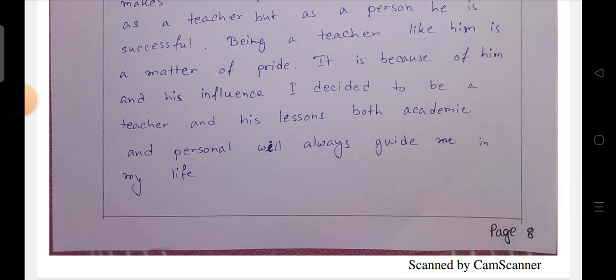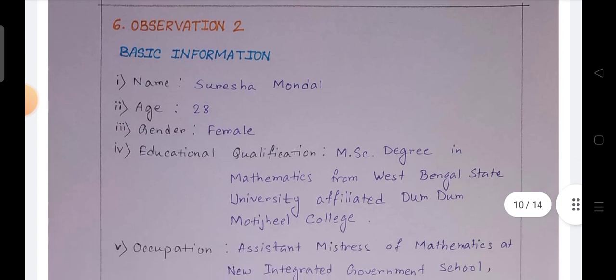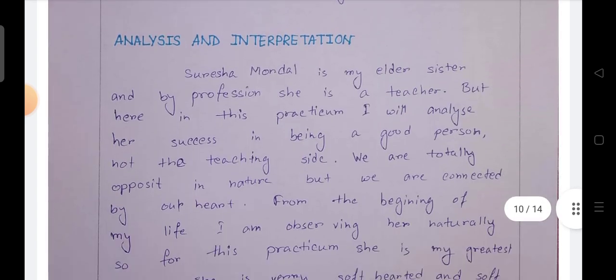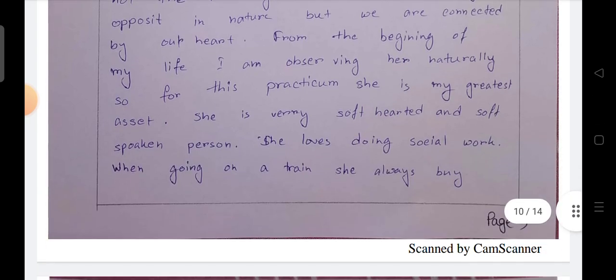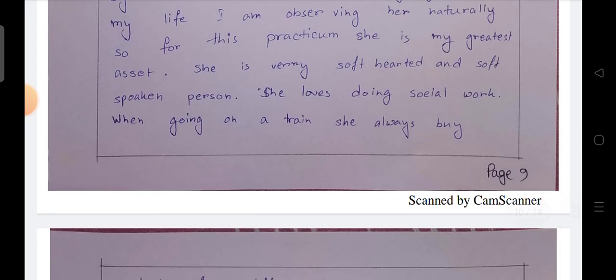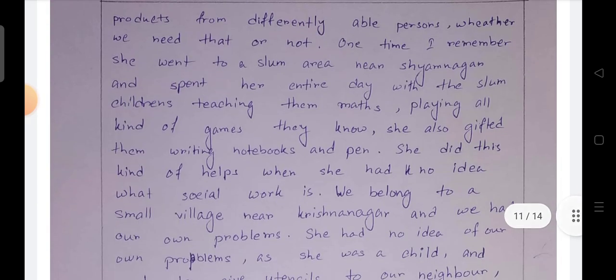Observation two, basic information. Here we took name of Sures Mandal, age, gender, educational qualification, and occupation. Analysis and interpretation: from the beginning of my life I am observing her naturally, so this practicum is my greatest asset. She is very soft-hearted and soft-speaking person. Process from difficult table person, whatever we need that or not. One time I remember she went to a slum area near and spent her entire day with the slum children teaching the maths.